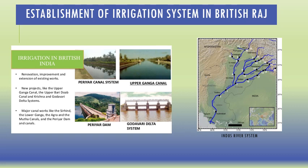The British Raj also developed canal systems: the Pariyar Canal system, Upper Ganga Canal, Pariyar Dam, the Ganga-Dawari Delta system, the Indus River system, and so on.